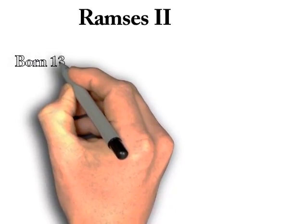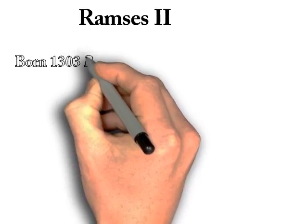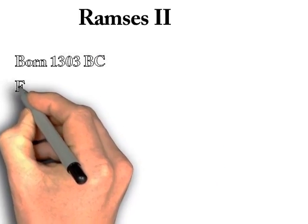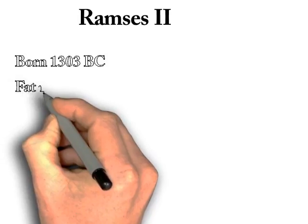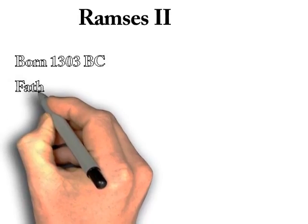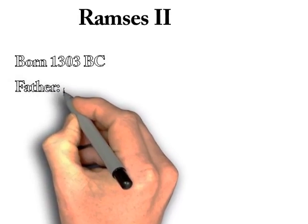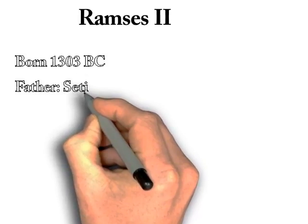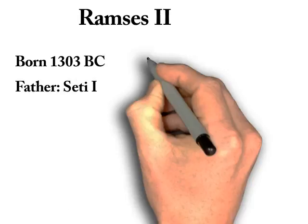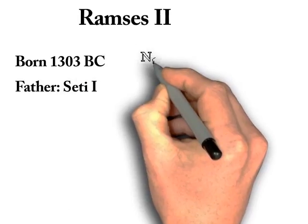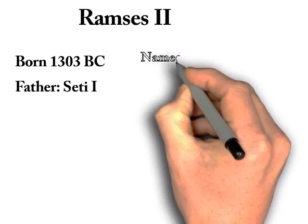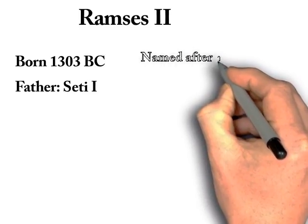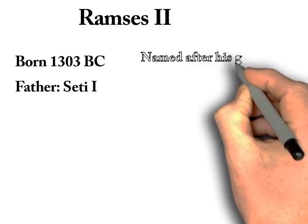However, his brother died when Ramses was at the age of 14, and due to that, Ramses was to become the pharaoh of Egypt. Once Ramses was 15, he was the prince of Egypt. He also got married to two main wives, Nefertari and Isetnofret. Nefertari would rule by Ramses' side and would be powerful in her own right.